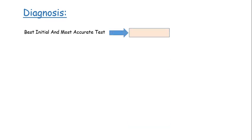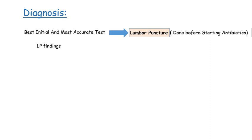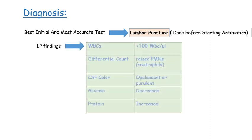The best initial and most accurate diagnostic test is lumbar puncture, which should be done before starting antibiotics, because once antibiotics are started they will decrease the bacterial load and bacteria won't be detected. Lumbar puncture findings include WBCs greater than 100 per microliter, with a differential showing raised neutrophils.